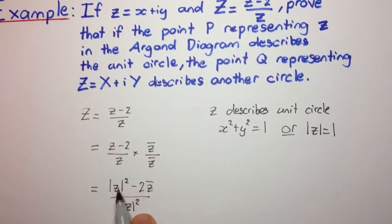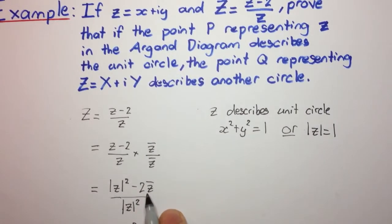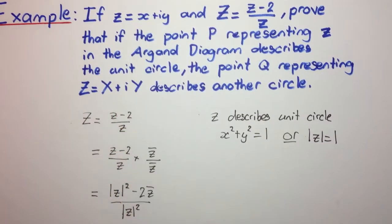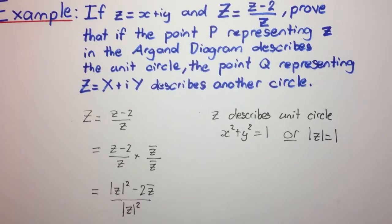Now, we know that the modulus of z is 1. So the modulus of z squared is going to be 1 squared, which is 1. So we're going to have 1 minus 2. Now, what's z bar? Well, if z is x plus i y, as given in the question, then z bar is x minus i y.